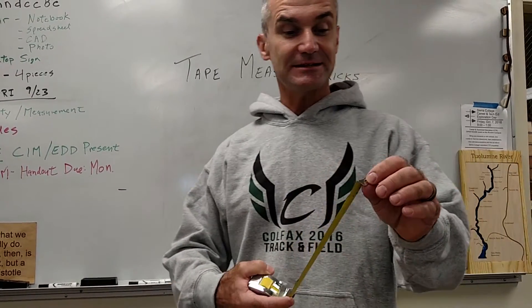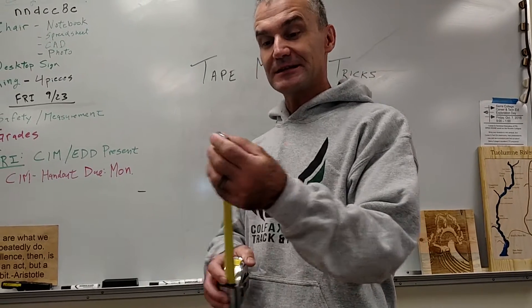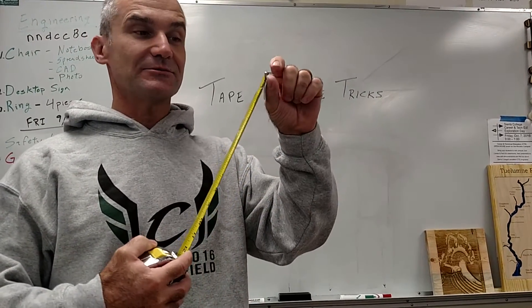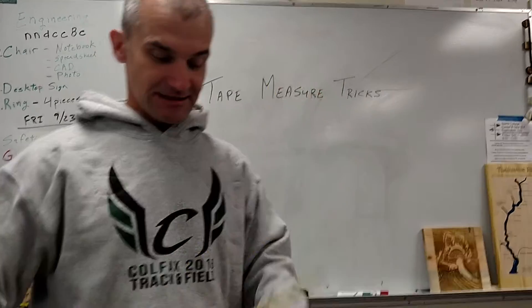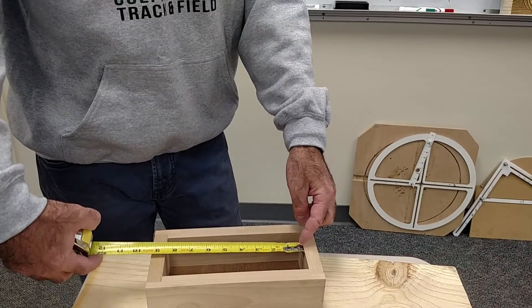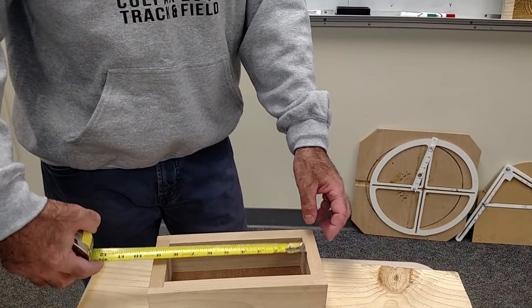A couple of cool things about the tape. This little metal part at the end, the tab, this is designed to travel the exact equal amount of the thickness of this. And that's so you can do an outside measurement or an inside measurement. So you push it in and you can do an inside measurement with it.